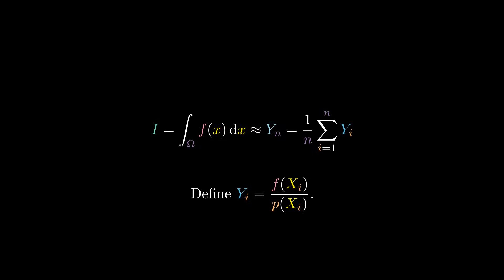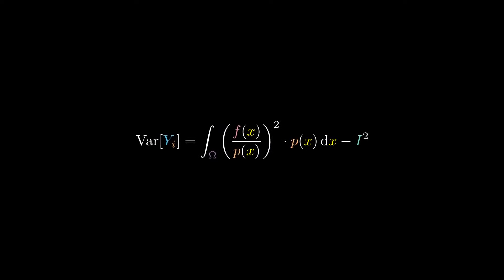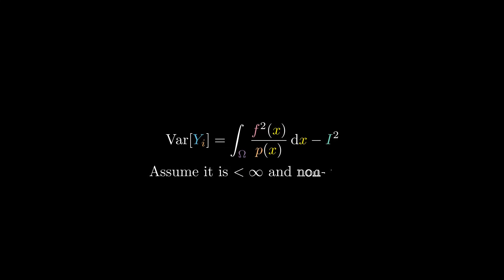We can compute it. We know that the expected value of y sub i is i, the integral we want to approximate. For the other term, we can use the definition of expected value. Therefore, to apply the CLT, we require this quantity to be finite and non-zero. From now we will assume it is.